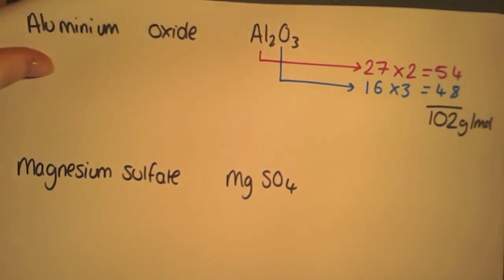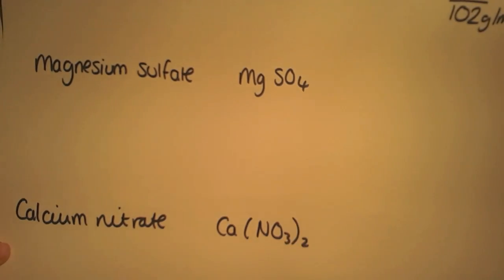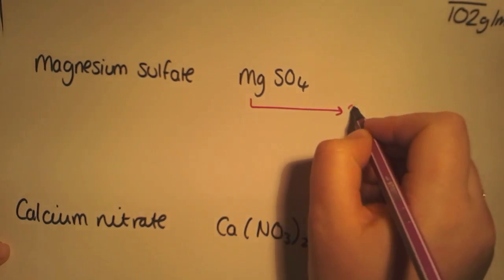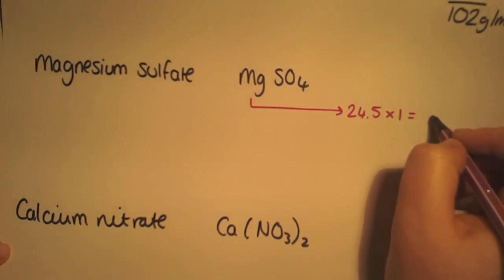Looking now at something which involves a group ion. When you write the formulae of a group ion, you keep all of the elements together and deal with them as a whole. However, when you look at the gram formula mass, you split them up. So we have magnesium, which you'll find has a gram formula mass of 24.5, and we have one of them.